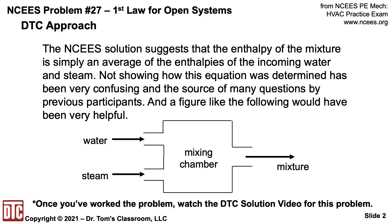The NCEES solution suggests that the enthalpy of the mixture is simply an average of the enthalpies of the incoming water and steam. Not showing how this equation was determined has been very confusing, with people asking why it is an average. A figure like the following would have been helpful, where you see water and steam coming into the mixing chamber and a mixture going out.